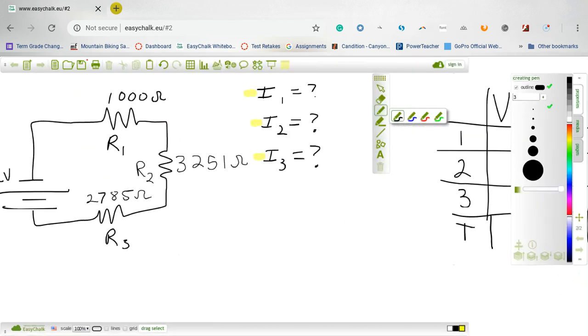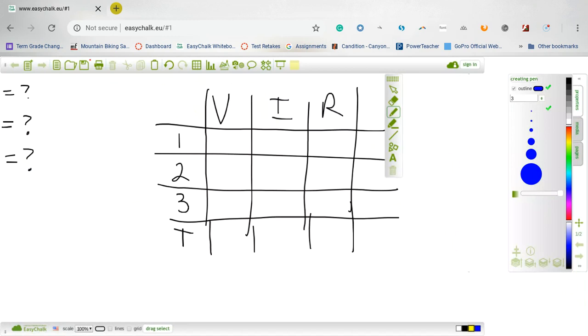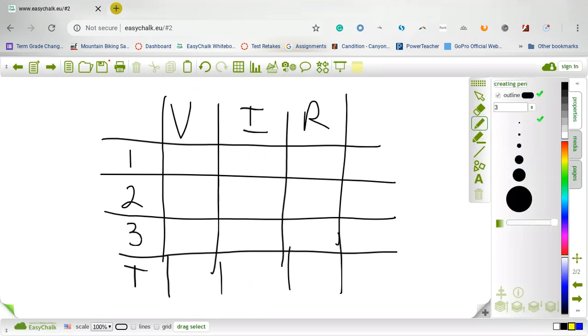We're going to fill in what we already know. The total voltage is 12 volts, and we know the resistance of each resistor. So the total voltage is 12 volts, resistor one is 1,000 ohms, resistor two is 3,251 ohms, and resistor three is 2,785 ohms.